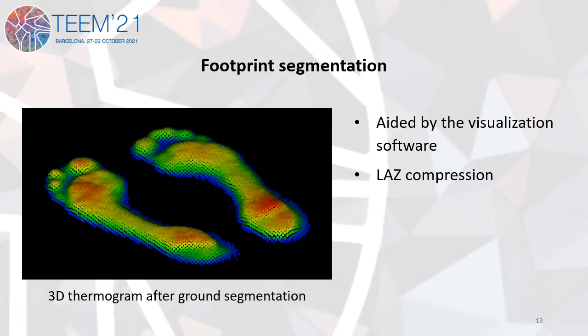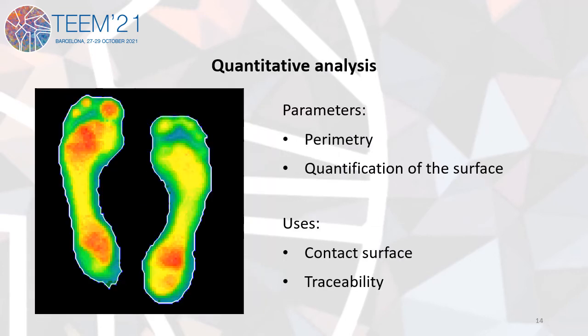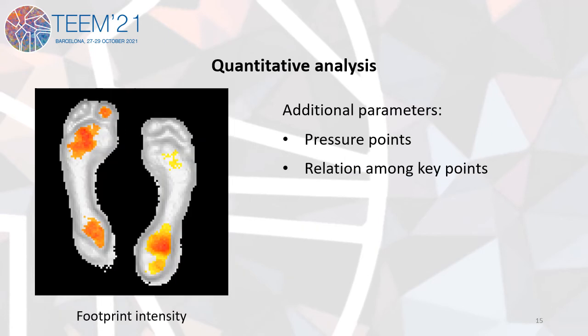The 3D thermograms can be applied to the institutional learning management system using a compressed format, to be not only inspected by the student but also processed for specific analysis, such as the ground segmentation to isolate each footprint, as shown on the screen. For example, quantitative analysis includes the generation of the perimeter of the area in contact with the ground, so the effective ground contact surface can be measured and related to the morphology of the foot, or the comparison of the intensity of the footprint relative to the ground plane, showing the most relevant areas and establishing proportionality among the pressure points.